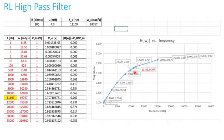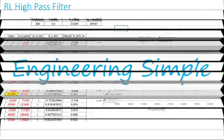That's why it's called a high pass filter — it passes only signals with high frequency. Thank you and have a great day.